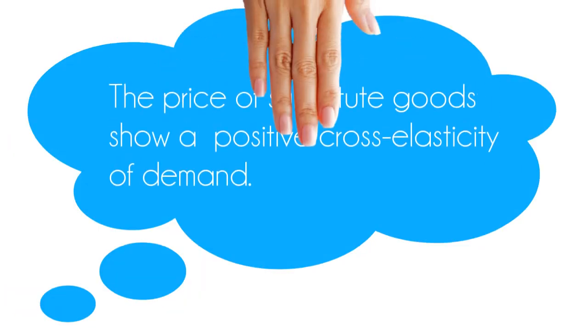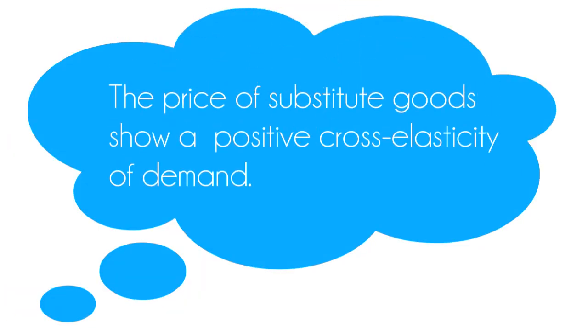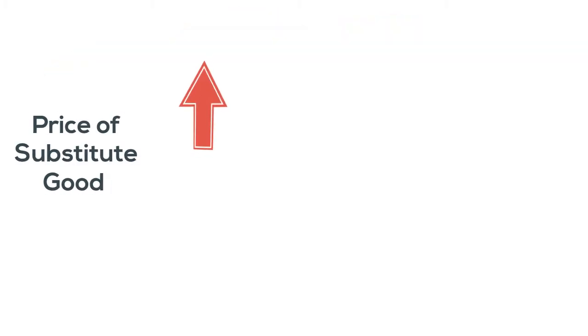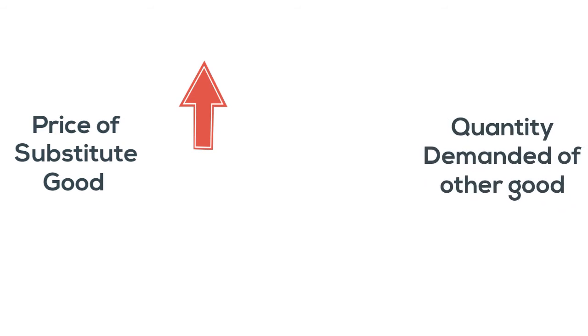The price of substitute goods shows a positive cross-elasticity of demand. That means when the price of one good goes up, the quantity demanded of the other rises, and when the price of one good goes down, the quantity demanded of the other falls.